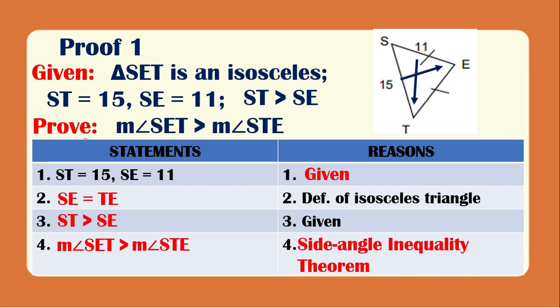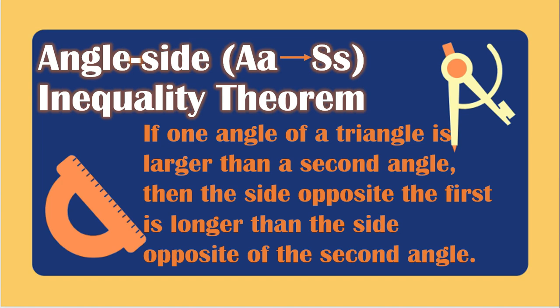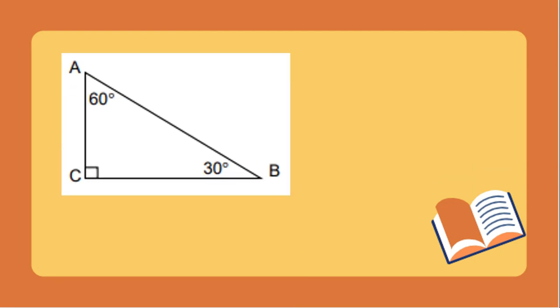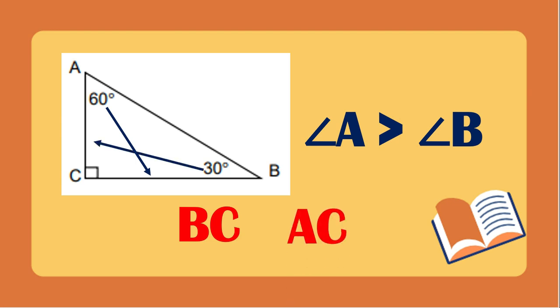Now let's have the Angle-Side Inequality Theorem. If one angle of a triangle is larger than a second angle, then the side opposite the first is longer than the side opposite the second angle. Using this figure, angle A is greater than angle B. The opposite side of angle A is side BC, and the opposite side of angle B is side AC. If angle A is greater than angle B, then BC is also greater than AC.